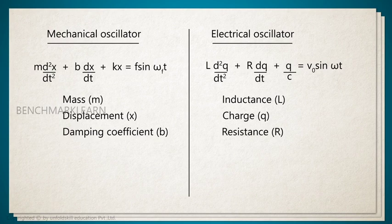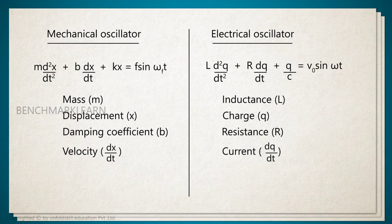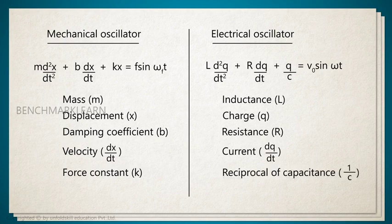In the case of the mechanical oscillator where velocity dx/dt, it represents the current dq/dt in the electrical oscillator. In the place of force constant k for the mechanical oscillator, we have the reciprocal of the capacitance in the electrical oscillator.